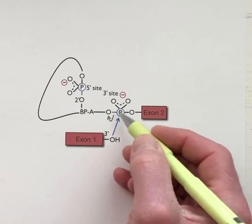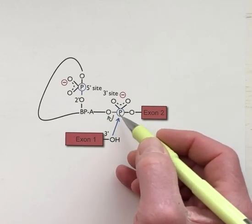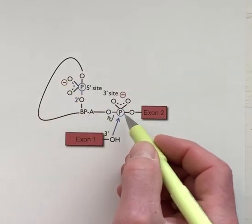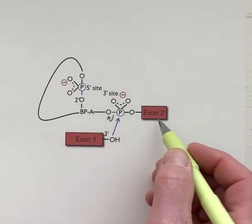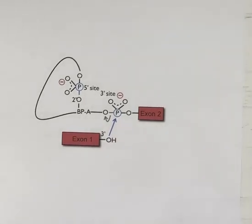This electrophile is the phosphorus connecting the intron to exon number two. And the final product is shown here.